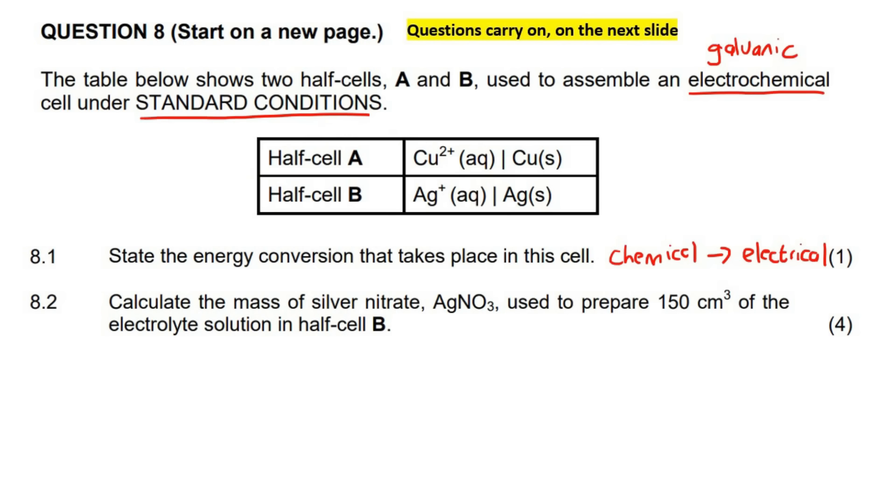But they said standard conditions. We should remember that these half cells that we get on our table - you know, table 4A, table 4B - those conditions, concentrations that is, are always going to be 1 mole per decimeter. Yes, there's also temperature conditions and pressure conditions, but with concentrations, what we've learned is that all of the concentrations must be 1 mole per decimeter.